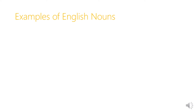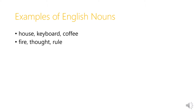Some examples of English nouns are objects like house, keyboard, and coffee. But also more abstract things like fire, thought, and rule. Thought and rule refer to very abstract, non-physical things, but they're still things, and so the words that refer to them are nouns — the words that name them.